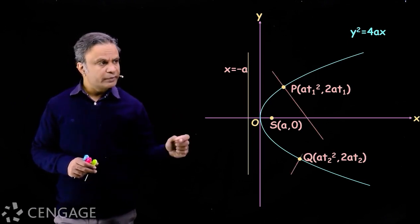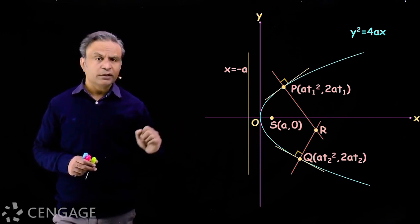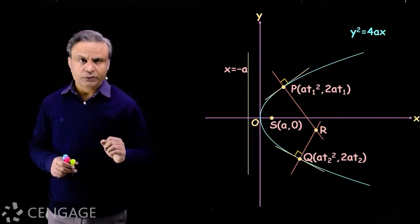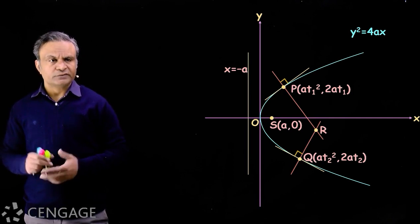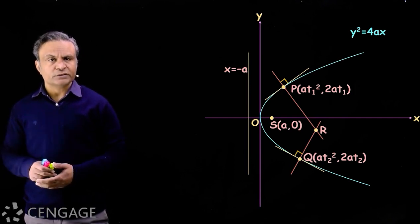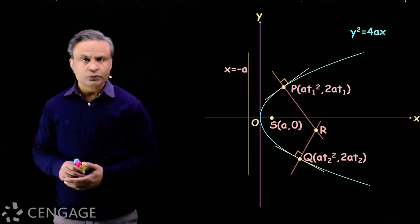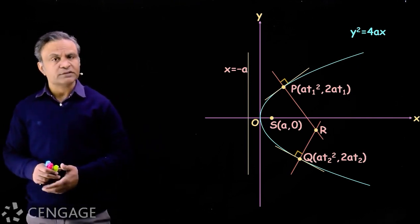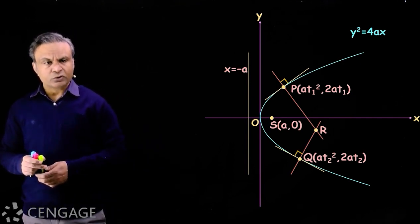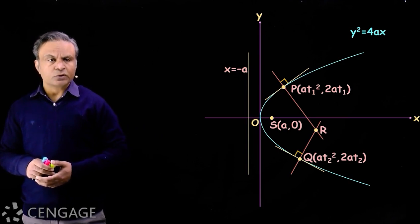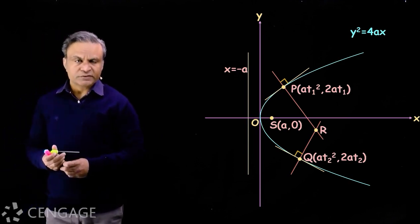We draw normals to the parabola at points P and Q, which intersect at point R. We want to find the coordinates of point R. We have the standard coordinates of the point of intersection of normals at P and Q, whose parameters are t1 and t2. For that, we solve the equations of normals at P and Q.